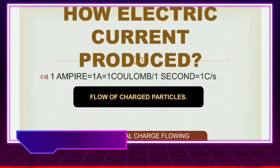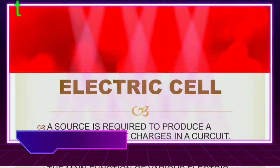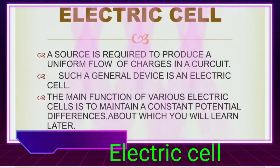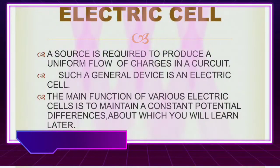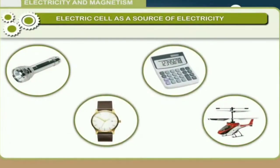How electric current produce student? When one ampere that is 1A is equal to one coulomb per one second. Let us move towards the first electric cell. Students, a source is required to produce a uniform flow of charges in a circuit. Such a general device is an electric cell. Various types of electric cells are available today. They are used in range of machines from wrist watches to submarines.